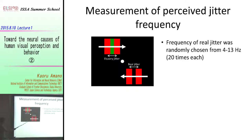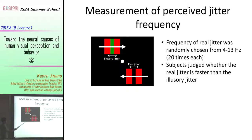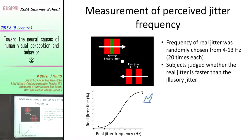The speed of this real jitter was manipulated from 4 to 13 hertz. Subjects judged whether this real jitter frequency is faster than this illusory jitter frequency. As a result, we can get this kind of psychometric function. This is the real jitter frequency, and this is the percentage of trials where the subject answers that the real frequency is faster than the illusory jitter frequency.